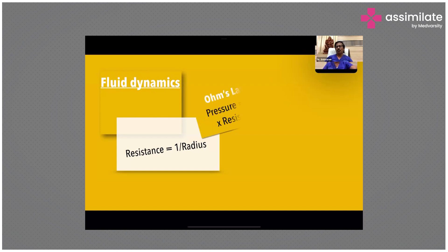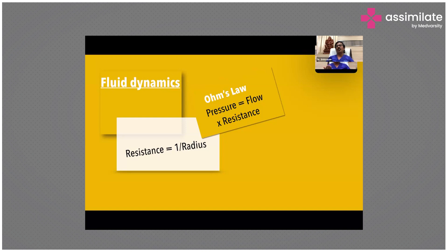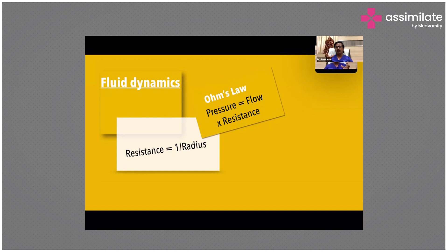The second concept is Ohm's law, usually displayed for electricity, but it applies to fluid dynamics as well. Pressure is related to flow and resistance. When resistance falls, pressure falls; when resistance rises, pressure goes up. In this context, instead of resistance, we consider radius or vasoconstriction. With vasoconstriction, the radius is reduced and pressure goes up — that is what happens in Group 1 pulmonary hypertension. In certain situations like congenital heart disease with a left-to-right shunt, increased flow across the pulmonary artery also raises pressure without an increase in resistance. What we are focusing on today is Group 1, where resistance goes up because there is a reduction in the radius of the pulmonary vasculature.